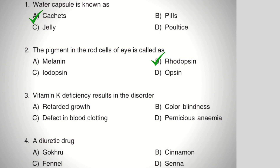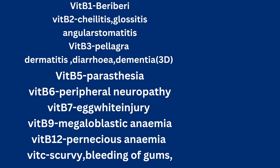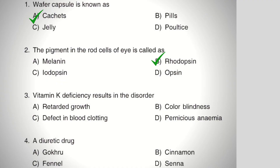Next question: vitamin K deficiency results in the disorder — Option A: retarded growth, Option B: color blindness, Option C: defect in blood clotting, Option D: pernicious anemia. The right answer is Option C, defect in blood clotting. Color blindness is a deficiency disorder of vitamin A, and pernicious anemia is a deficiency disorder of vitamin B12, that is cyanocobalamin. Vitamins and their deficiency disorders are an important topic for all government pharmacist exams, so please pause the video and try to learn them.